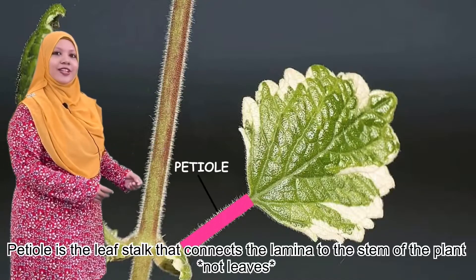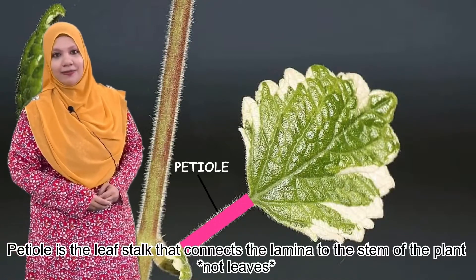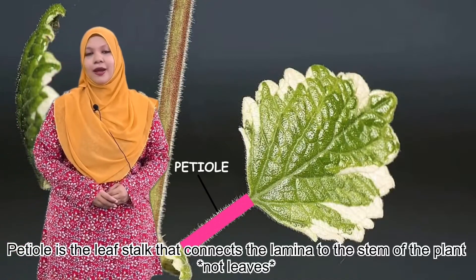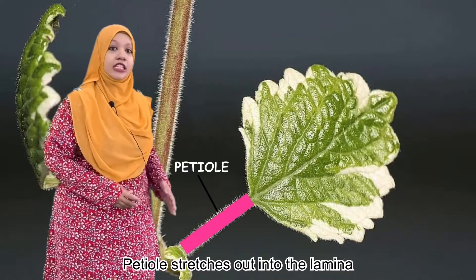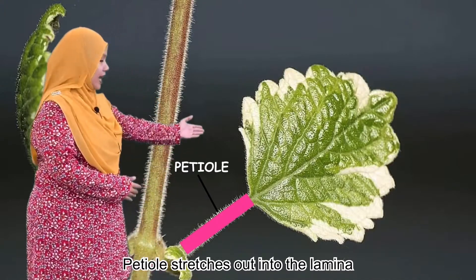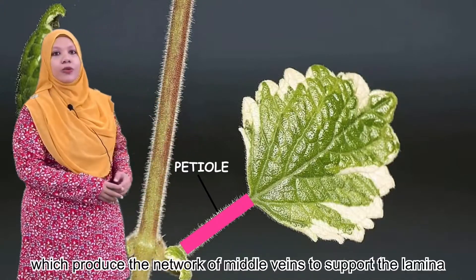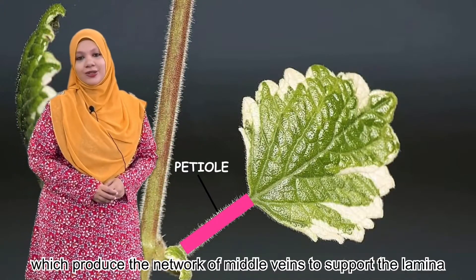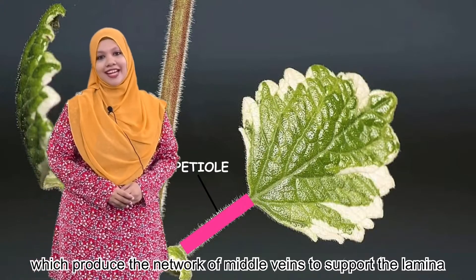The petiole is the leaf stalk that connects the lamina to the stem of the leaf. The petiole stretches into the lamina, which produces the network of midrib veins to support the lamina.